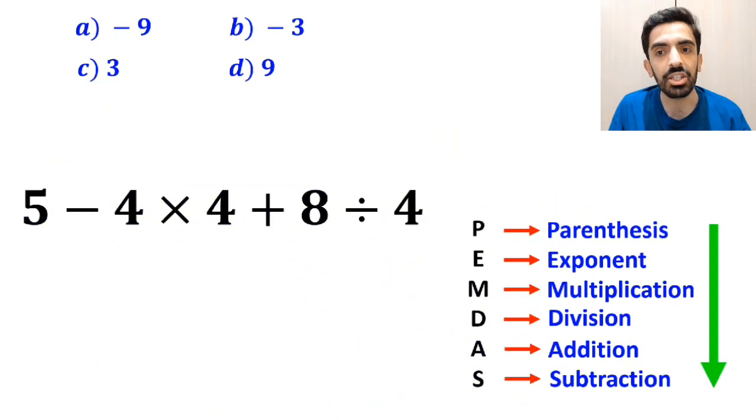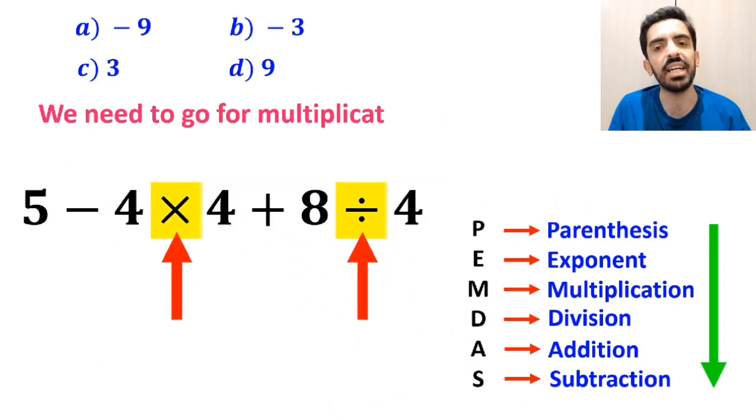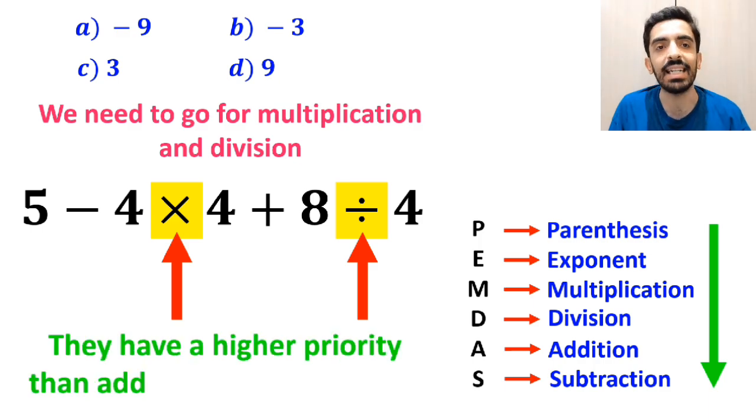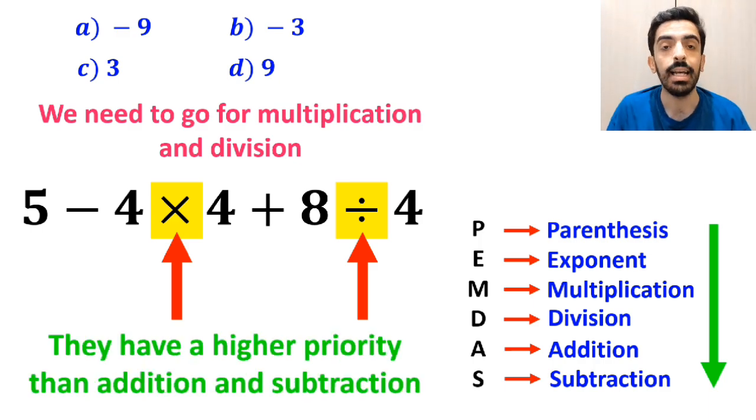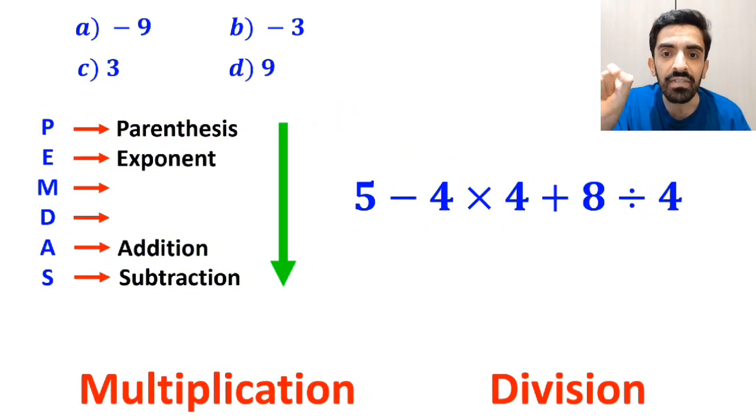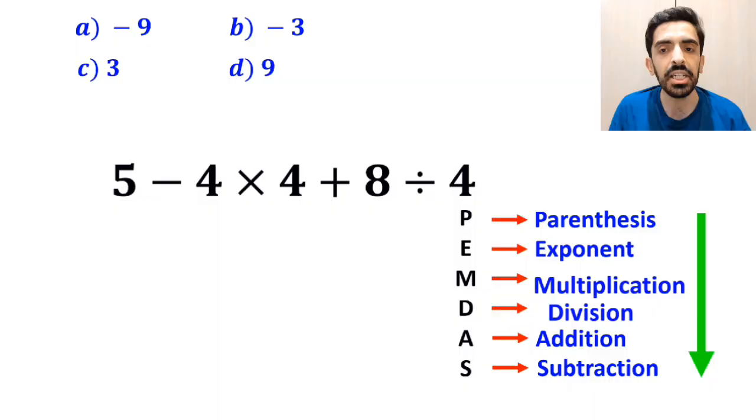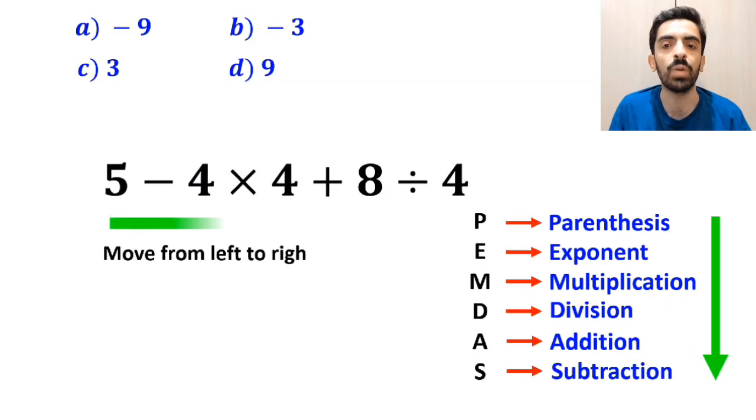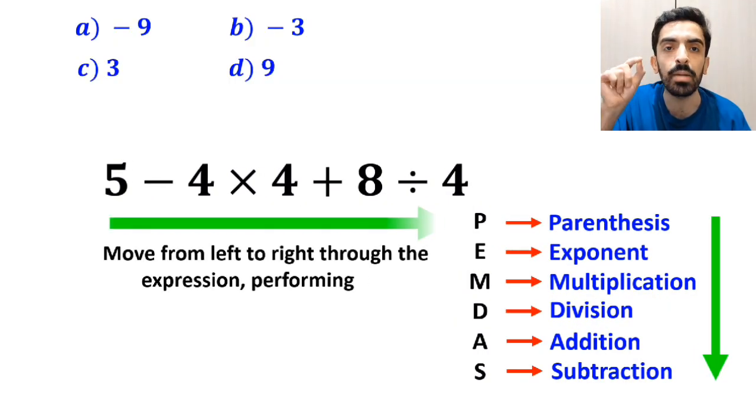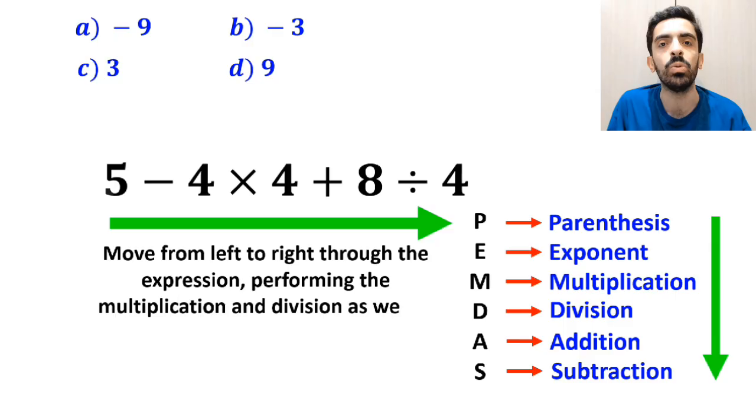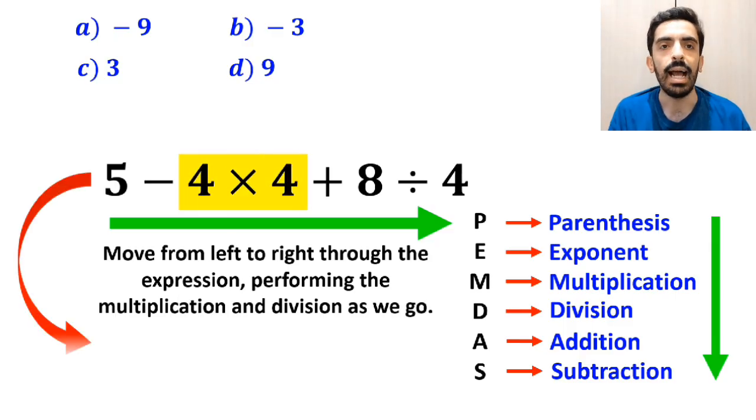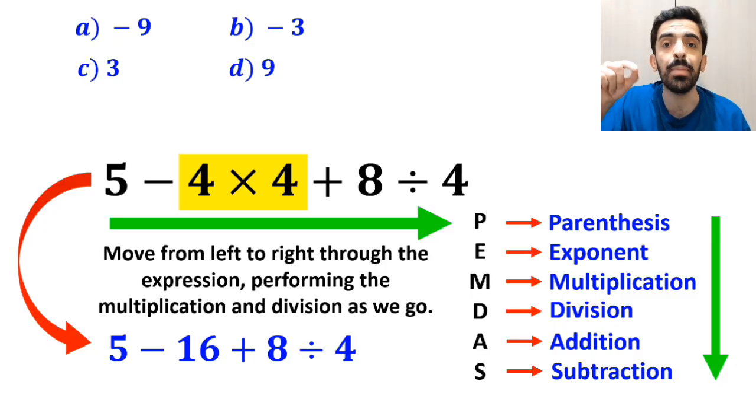In the next step, we need to go for multiplication and division, since they have a higher priority than addition and subtraction. However, it's very important to note that multiplication and division have the same level of priority. All we need to do here is move from left to right through the expression, performing the multiplication and division as we go. So, first we start with 4 times 4 and rewrite this expression as 5 minus 16 plus 8 divided by 4.